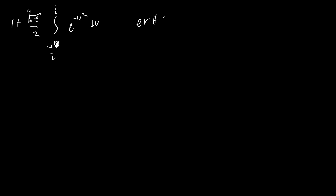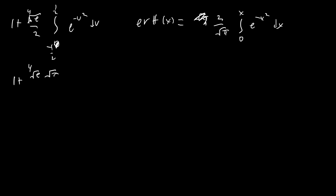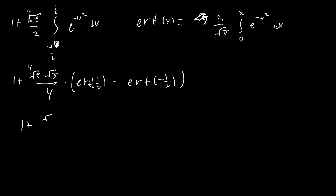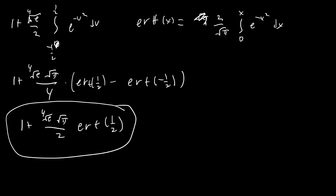Using the error function definition — erf(x) = (2/√π) times the integral from zero to x of e^(-t²) dt — we get one plus e^(1/4) √π / 4 times (erf(1/2) - erf(-1/2)). Since the error function is an odd function, this simplifies to: one plus (e^(1/4) √π / 2) times erf(1/2). That is our final answer for this marvelous summation that we converted into an integral. Hope you guys enjoyed the video!